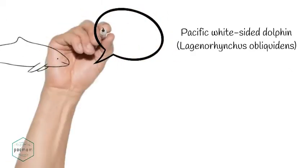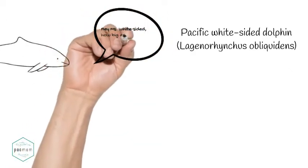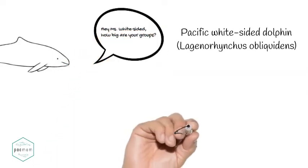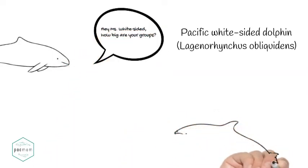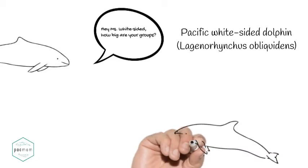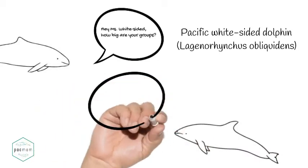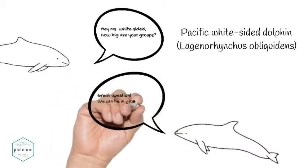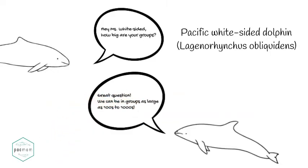The Pacific white-sided dolphin measures up to 8 feet, weighing up to 400 pounds, and lives up to 40 years. They are often quite acrobatic and playful at the surface, bow riding and jumping. Group sizes are usually between 10 and 100, but can be in groups of thousands. You'll find these guys in more open waters.